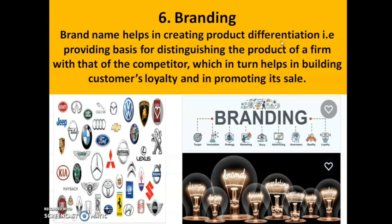The next function is branding. A brand name helps in creating product differentiation — providing a basis for distinguishing the product of a firm from that of its competitors. You can see there are a number of competitors in the field of car production. Branding helps in building customer loyalty and in promoting sales. Through their brand names, producers enjoy the loyalty of customers — customers get attracted to that product. That is the power of branding as one of the functions of marketing.